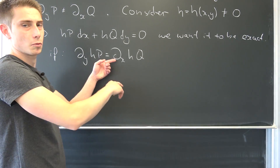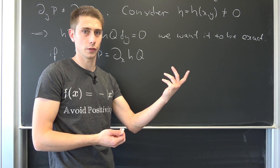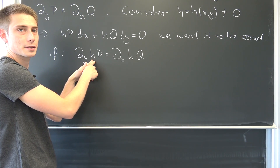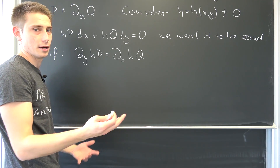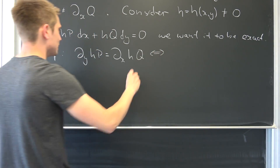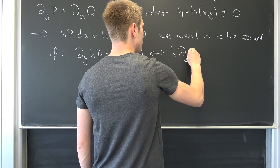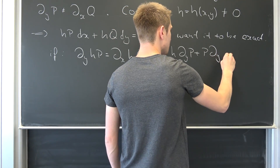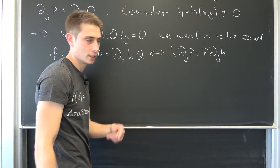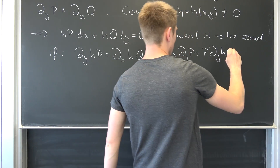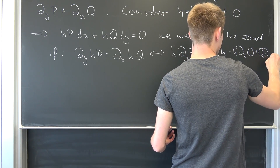The cool thing is we know how differentiation works, and even in two dimensions we still have our product rule. Differentiating the first part then multiplying it with the other one, and adding the other part times the second differential. That's equivalent to: H times del_y P plus P times del_y H equals H times del_x Q plus Q times del_x H.